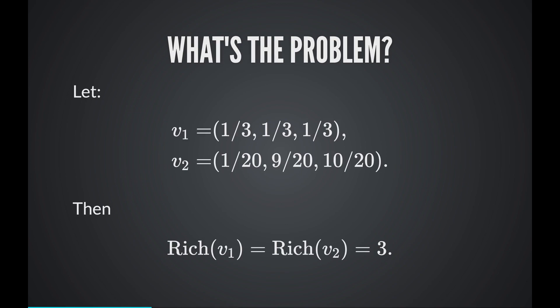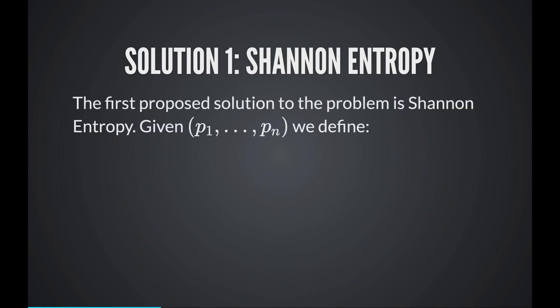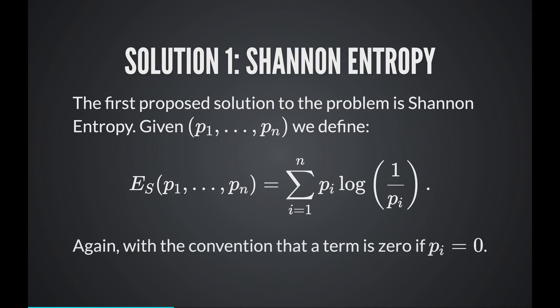So you might expect that in the second region the biological diversity has decreased. The first solution to this problem is called Shannon entropy. Suppose you have a probability vector P1 to Pn. The Shannon entropy is defined as the sum from i equals 1 to n of the proportion of species i times the log of 1 over that proportion. This measure is very famous and is used in information theory. We use the convention that a term is zero if Pi equals zero.